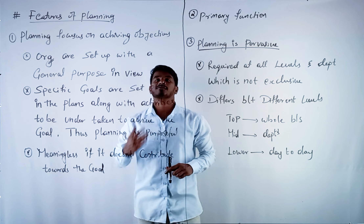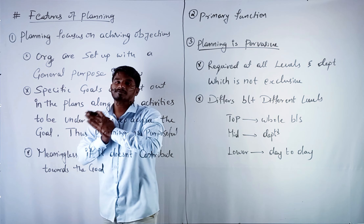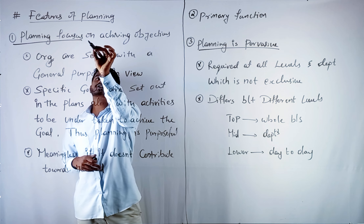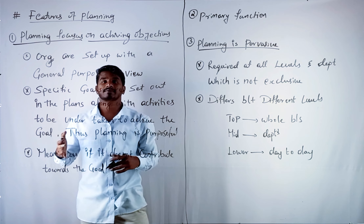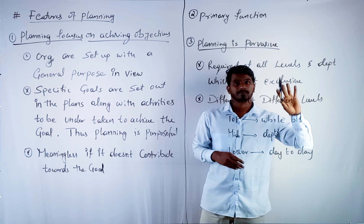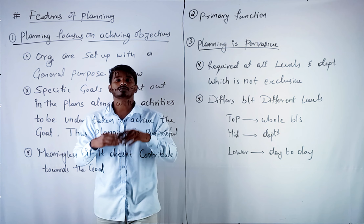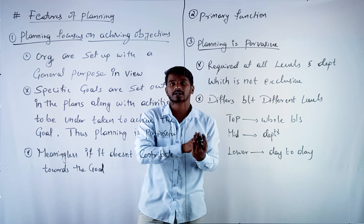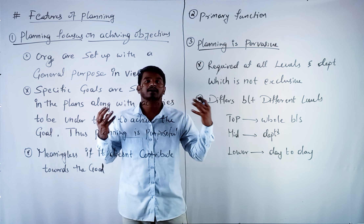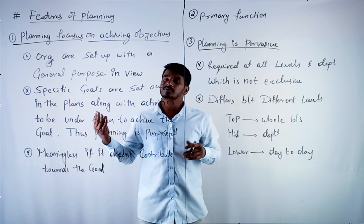Let us start with the features of planning. The first feature of planning is planning focuses on achieving objectives. In our pen example, the objectives were to earn much better profit, to reach a larger audience, or to create brand value. These were the objectives or goals.